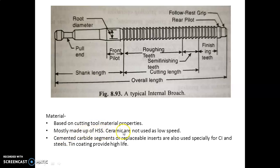Ceramic are not used as low speed. Cemented carbide segments or replaceable inserts are also used, especially for cast iron and steels. Tin coating provides high life. Let's discuss the typical internal broach in which various parts names are mentioned. This portion is called the shank here.